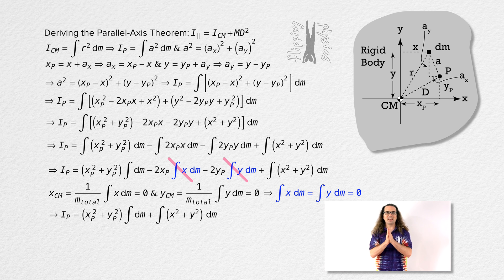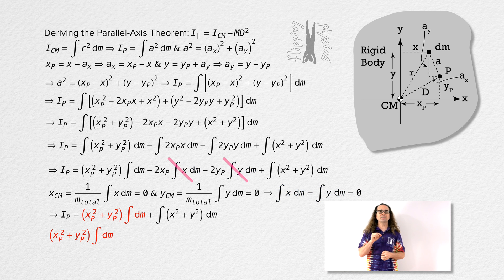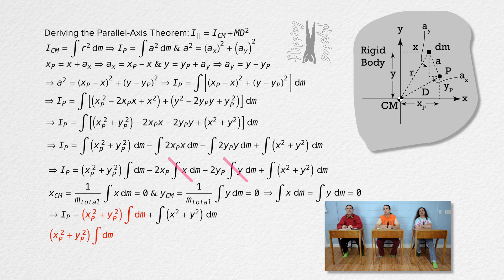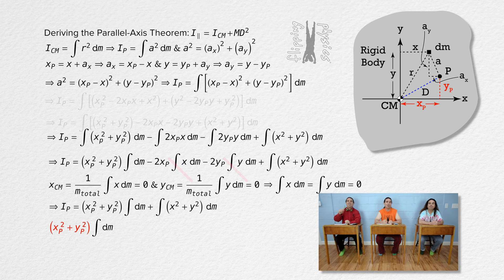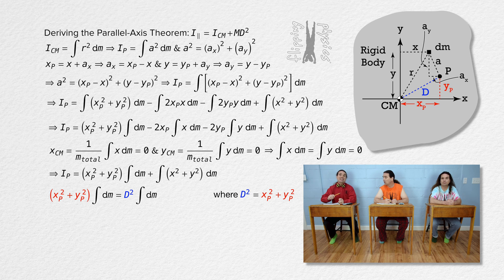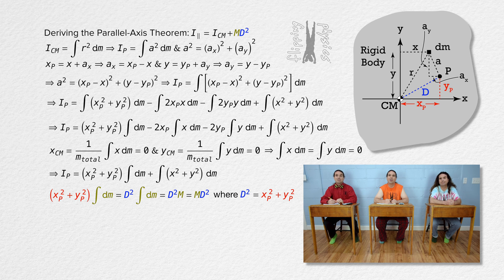Let's look at just the first term: the quantity x sub p squared plus y sub p squared, all times the integral with respect to mass. X sub p squared plus y sub p squared equals the square of the distance from the center of mass to point P — and that distance is capital D, as defined earlier. Capital D is the distance between the center of mass and point P, the location of the new axis of rotation. The integral with respect to mass is just the total mass, capital M. So we have capital M times capital D squared — one of the terms in the parallel axis theorem.